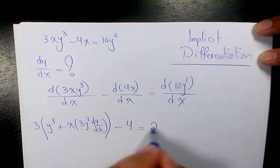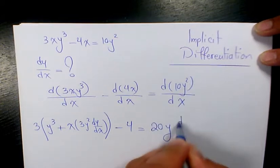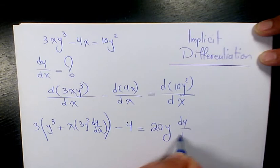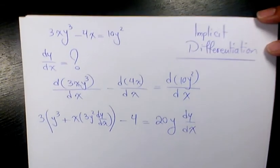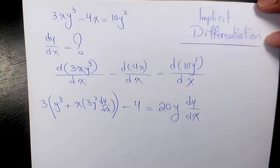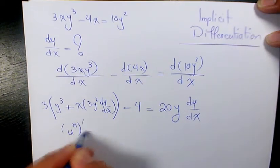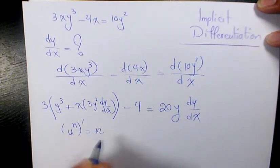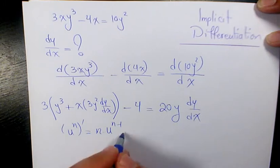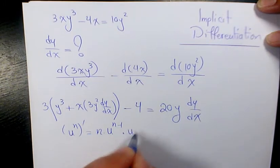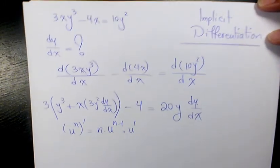And the derivative of 10y² is going to be 10 times 2, which is 20y, times dy/dx. Because the derivative of u to the power of n is n times u to the n minus 1 times u prime — that's why you have dy/dx.